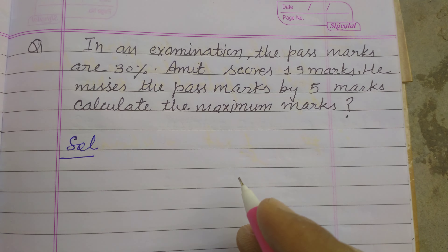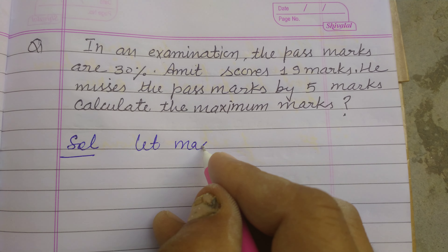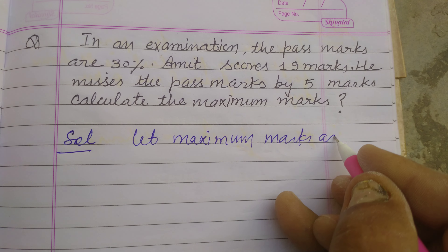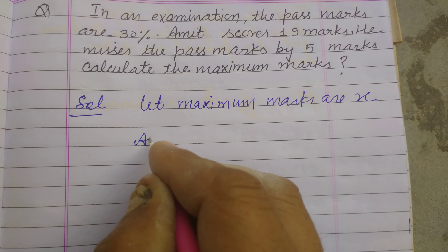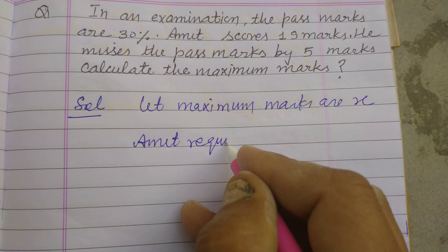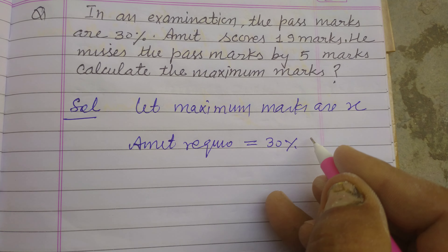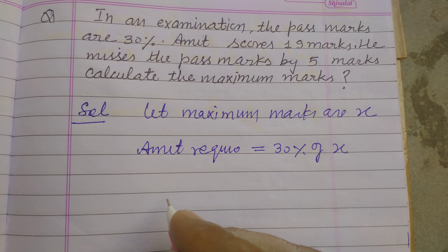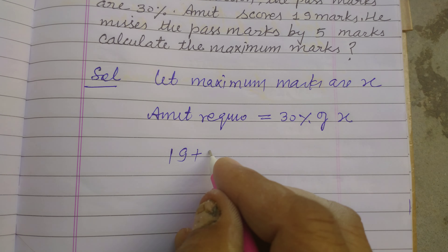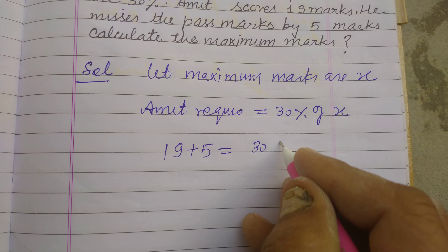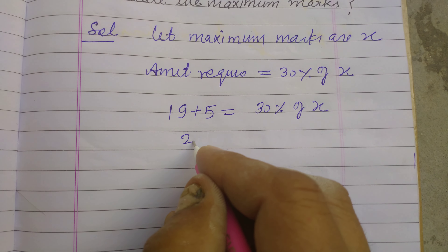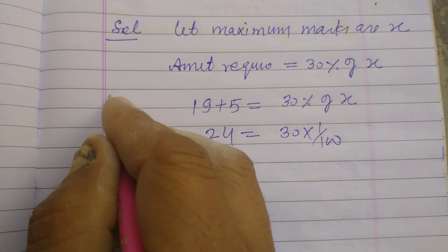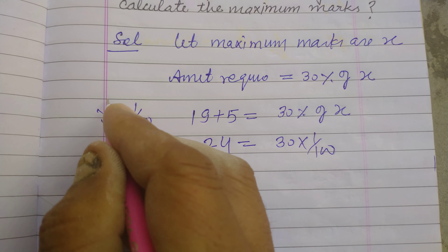Let the maximum marks be x. Amit required 30% of x to pass. He already got 19 marks; adding the 5 marks he missed by gives 19 plus 5 equals 24. So 24 equals 30% of x, which means 30 upon 100 into x.